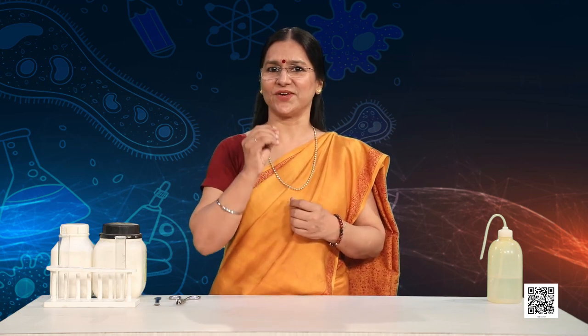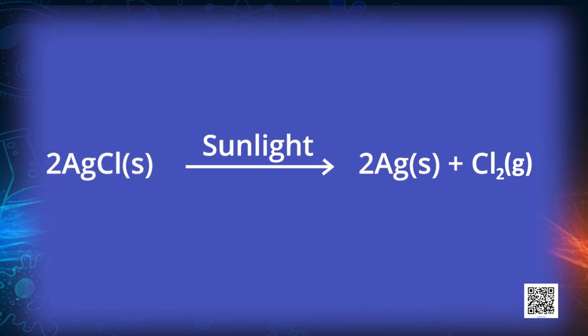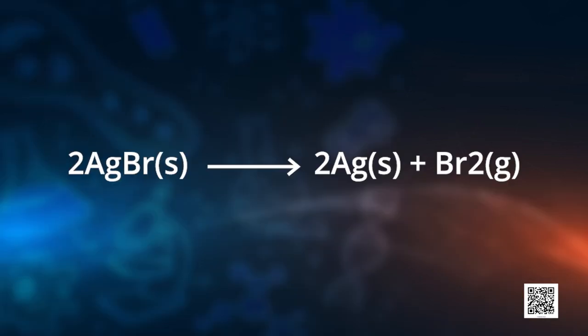We can write the chemical equations: 2AgCl in the presence of sunlight gives 2Ag + Cl2. Silver bromide behaves the same way: 2AgBr in the presence of sunlight gives 2Ag + Br2. These reactions are also used in black and white photography. This is decomposition by light.